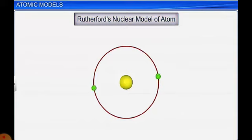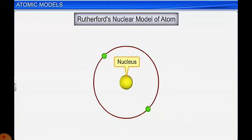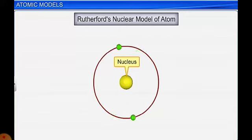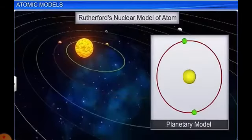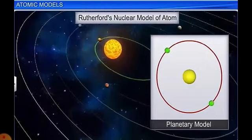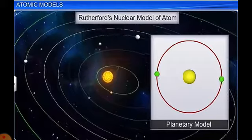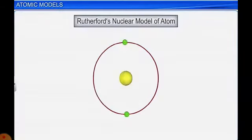This was termed Rutherford's nuclear model of atom, proposed after the discovery of protons. Electrons move around the nucleus in a circular manner. The nucleus (shown in yellow) is the small positive-charge center, and electrons move around it. It is similar to planets moving around the sun — the sun is at the center like the nucleus, and electrons are like planets. This is called the planetary model, and it could explain the neutrality of an atom.